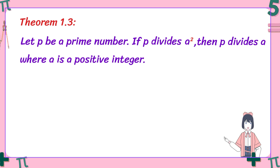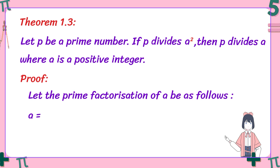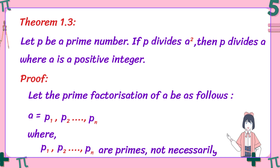Let's see the proof of this theorem — it is quite logical and will help you understand how proofs work. Let the prime factorization of a be as follows. We assume a has n prime factors. We give these prime factors the names P1, P2, till Pn.